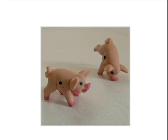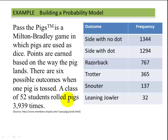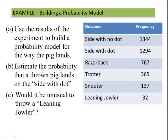Pass the Pigs is a well-known game where players use these little pigs as dice. There are six different outcomes and we're going to estimate those probabilities using the empirical method. A class of 52 students rolled the pigs a total of 3,939 times and recorded the frequencies. Here are each of the outcomes and the corresponding frequencies. Part A, we're going to use the results of this experiment to build a probability model for the way the pig lands. Part B, estimate the probability that a thrown pig lands on the side with a dot. And Part C, would it be unusual to throw a leaning jowler?